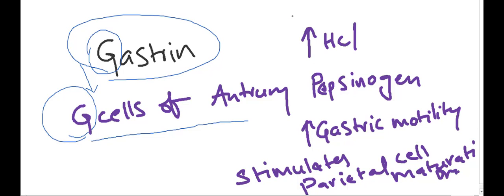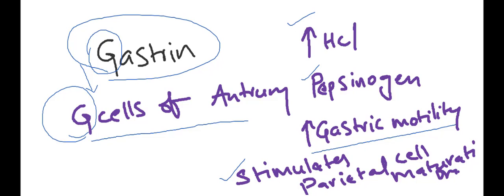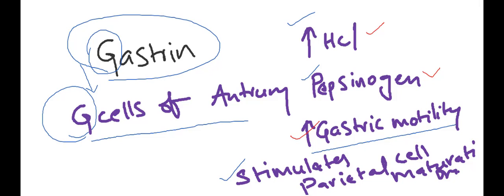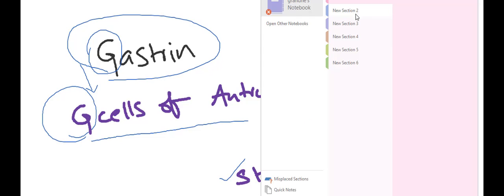The functions of gastrin hormone are: increasing hydrochloric acid secretion, increasing pepsinogen secretion, increasing gastric motility, and stimulating parietal cell maturation. These four are the functions of gastrin.